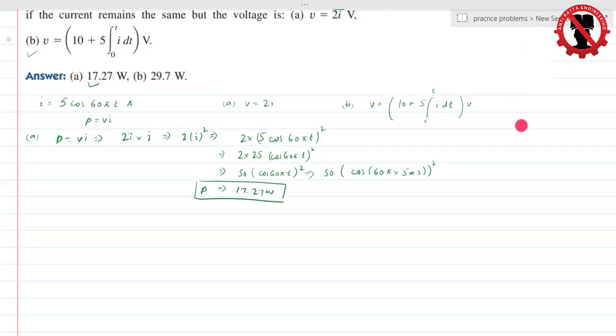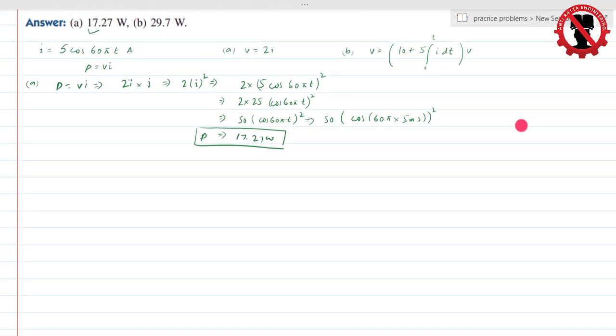Now let's solve for part B. For part B, the voltage we have is equal to 10 plus 5 integration from 0 to t of I dt. So 10 plus 5 integration from 0 to t... Now i value is 10 plus 5, 5 cos of 60 pi dt. Now this is the voltage value. Now if I need to find power, I have to do V into i.